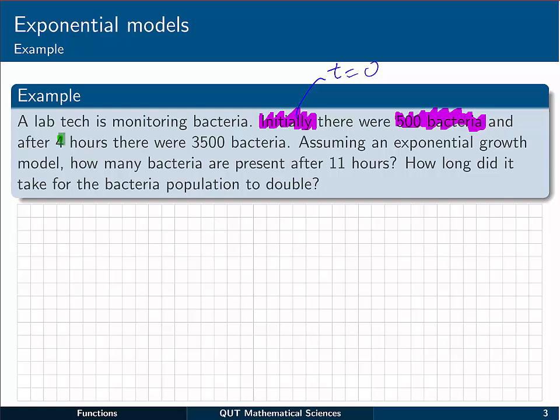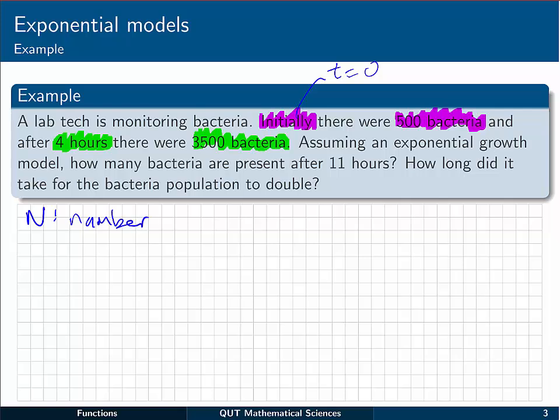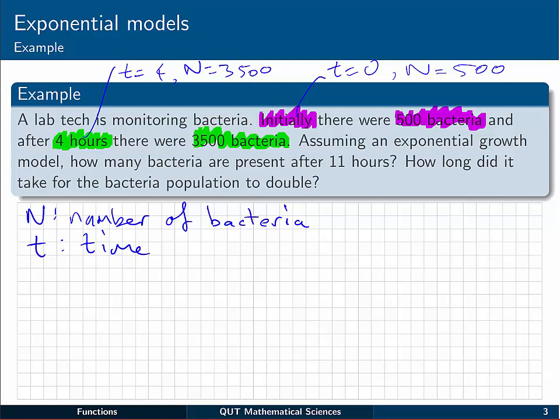After four hours, so that's another time value, t equals 4, there's 3500 bacteria. So here we're looking at perhaps N being the number of bacteria, and t being the time after the experiment or the monitoring started. So we've got t equals zero and N equal to 500, and at t equals 4, N is equal to 3500. So we know a little bit about the situation.